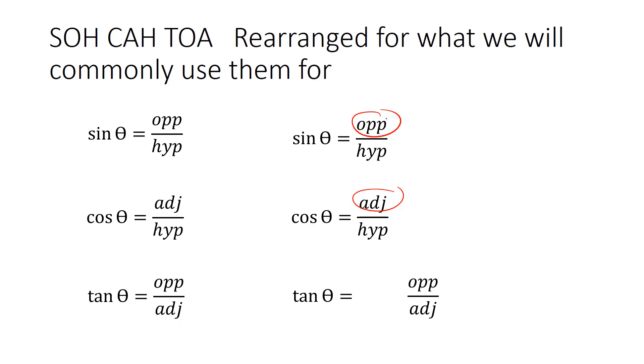And therefore, to get the opposite isolated, it's in the numerator. So if I get rid of the hypotenuse, I'm left with opposite, and that's exactly what I want. So I'm going to go ahead and multiply both sides by the hypotenuse, getting rid of the hypotenuse. And I'm left with opposite equals sine of the angle times the hypotenuse.